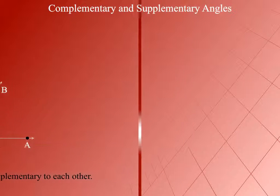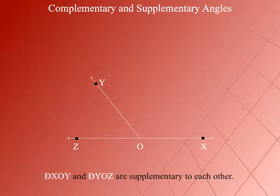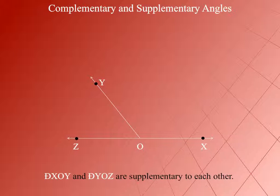When the sum of the measure of two angles is 180 degrees, each one is called supplementary to the other. Here, Angle XOY and Angle YOZ are supplementary to each other.